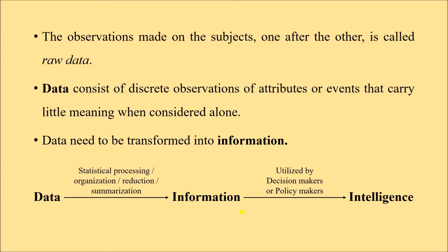Whenever data undergoes statistical processing, organization, reduction, or summarization, it becomes meaningful information. In this example, since we have the blood pressure of individual students, we can classify them into three groups: normotensive (normal blood pressure), hypertensive (high blood pressure), and pre-hypertension (between normal and hypertension). Based on this information, management decisions can be made — hypertensive students may need lifestyle and dietary modification or medication, while pre-hypertensive students can begin with dietary and lifestyle changes.